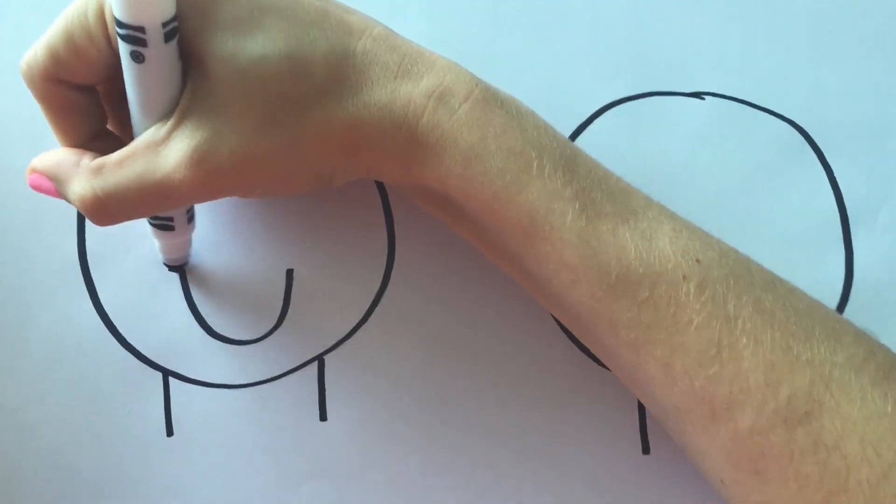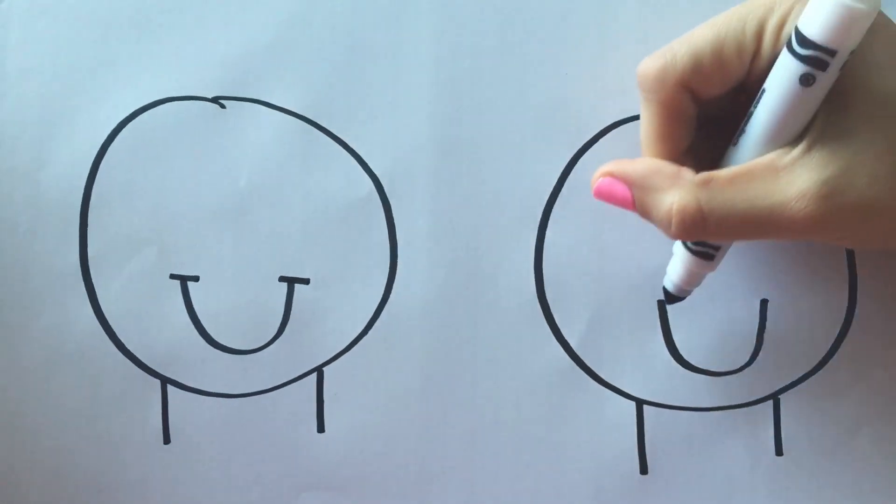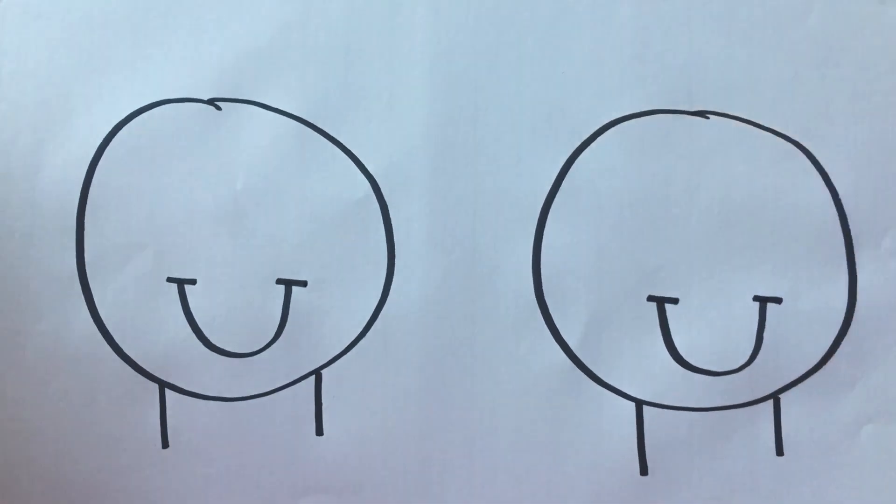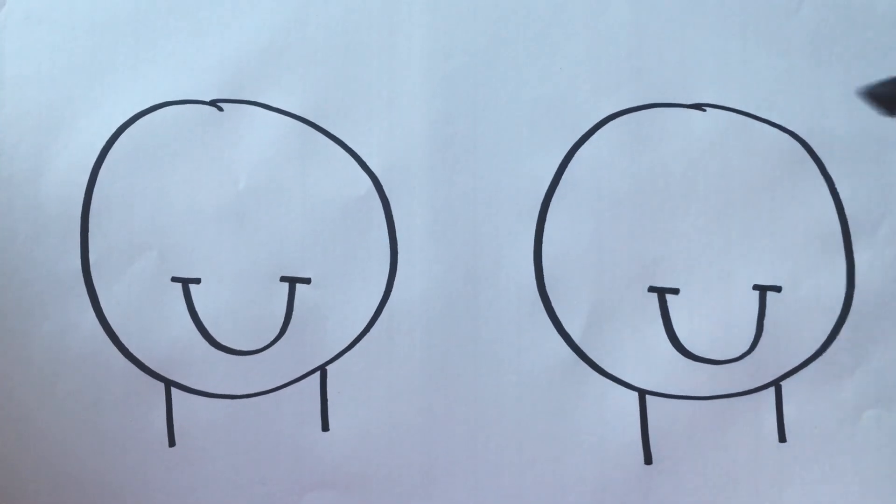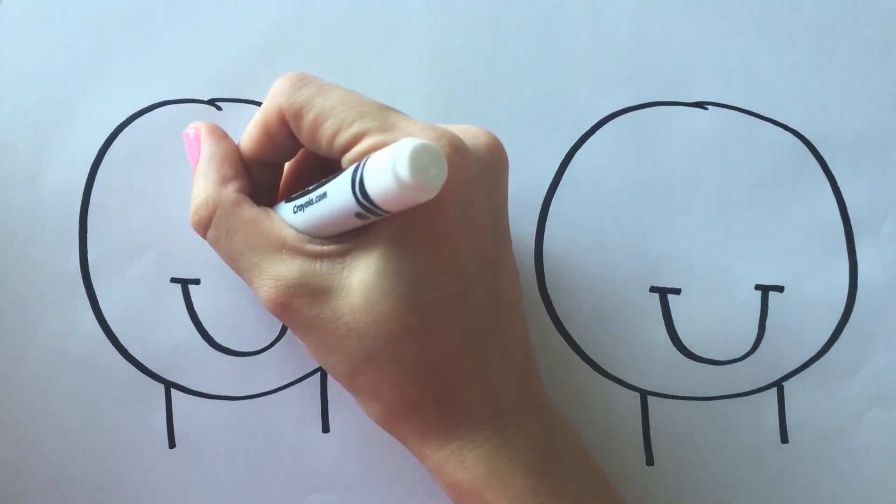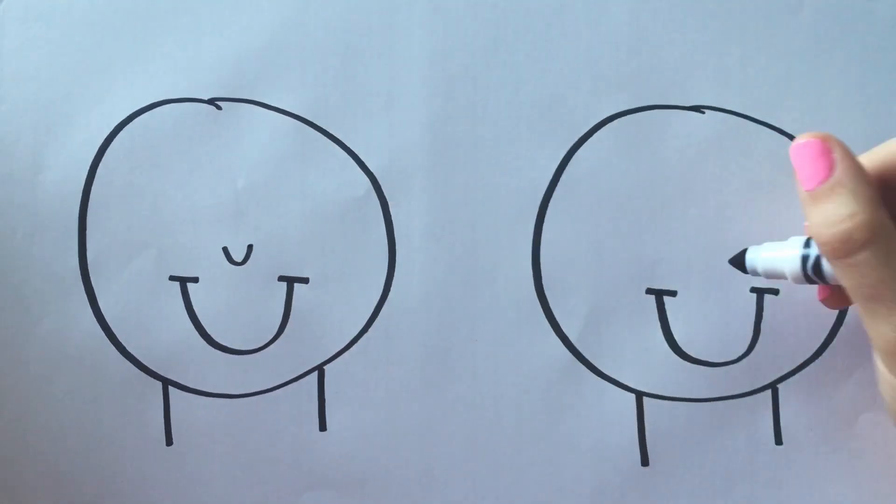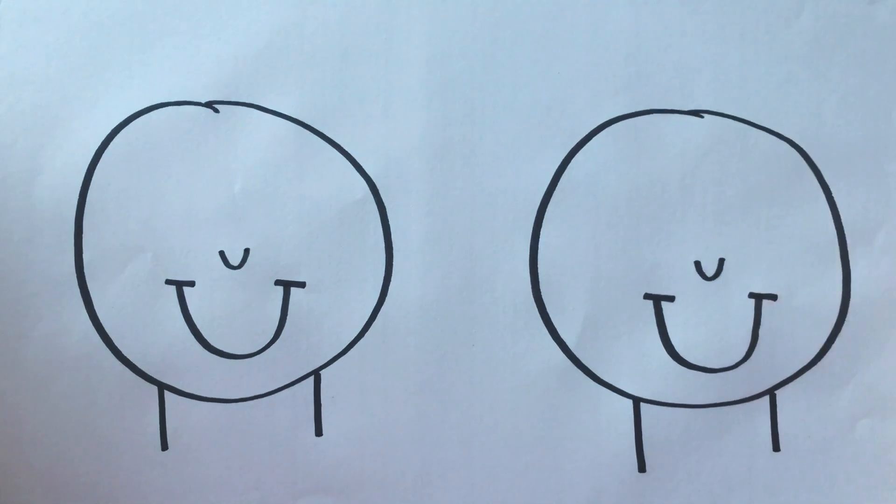And on top of that, we do two little lines, like that. Now we're going to add a little button nose, which is like a miniature version of the big smile.